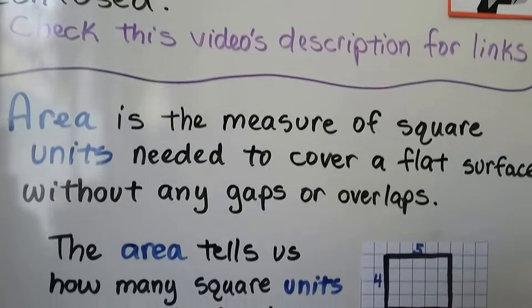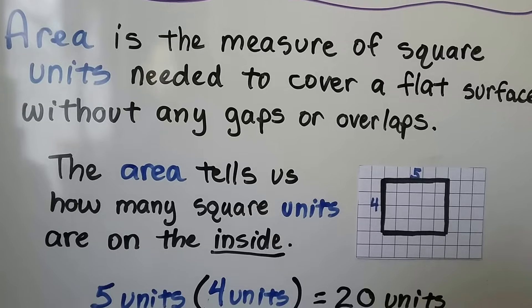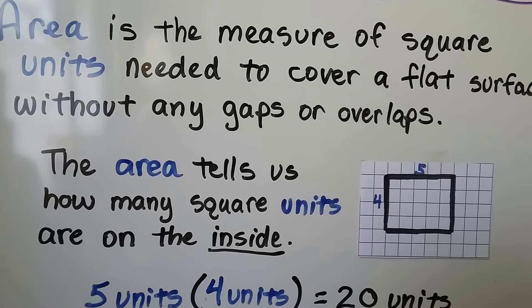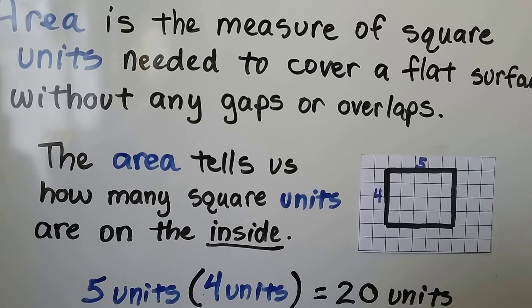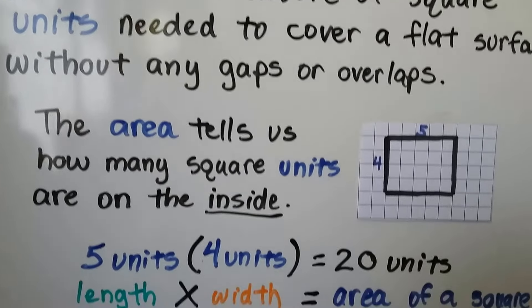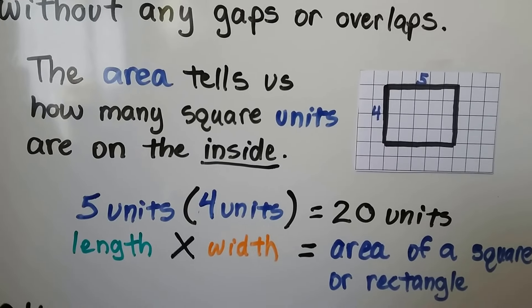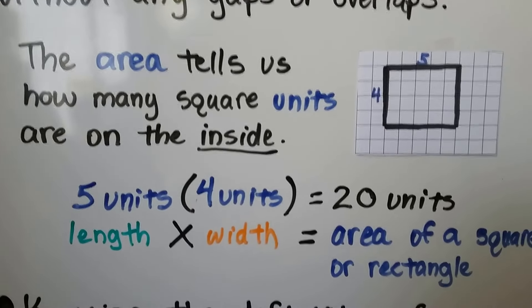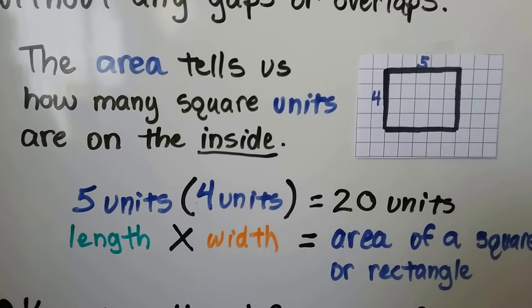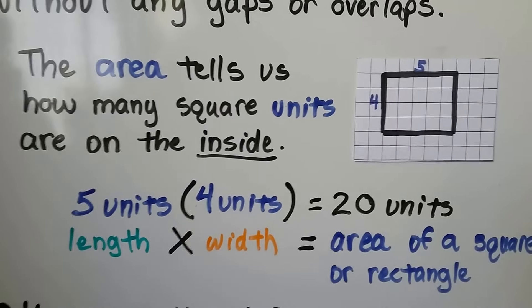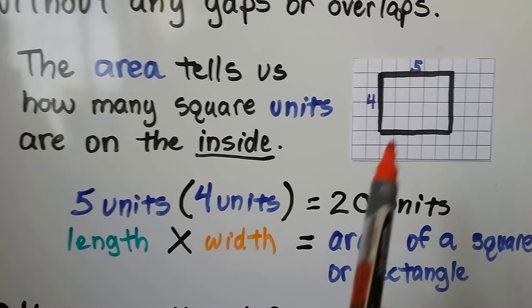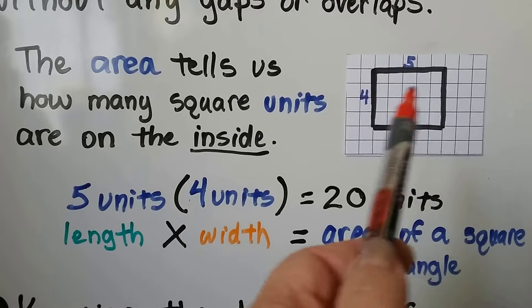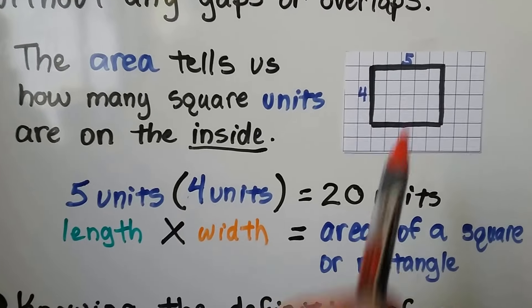Area is the measure of square units needed to cover a flat surface without any gaps or overlaps. The area tells us how many square units are on the inside. We did perimeter in the last video — that was like a fence going around the outside of a yard. Now we're going to figure out what the inside measure is in square units.